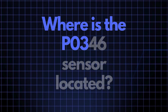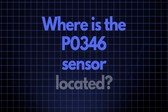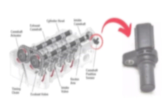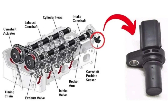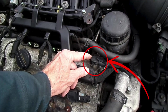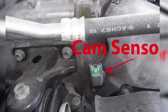Now, where exactly is the P0346 sensor located? The camshaft position sensor responsible for triggering the P0346 code is usually positioned close to the camshaft. Its exact location can vary depending on your vehicle's make and model, but you'll typically find it either on the valve cover or directly in the cylinder head.